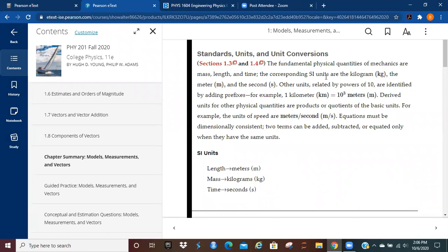Derived units from other physical quantities are products or quotients of the basic units, taking one unit and dividing it by another. So if you look at speed, it's going to be meters divided by seconds. Equations must be dimensionally consistent. Two terms can be added, subtracted, or equated only when they have the same units. You can't say that one kilogram is equal to 10 seconds. They're not the same units. It doesn't work that way.